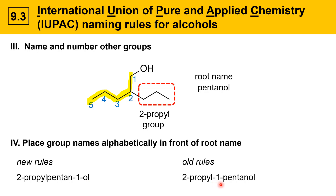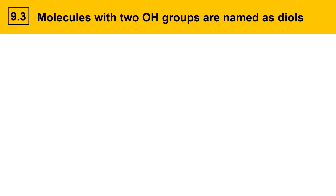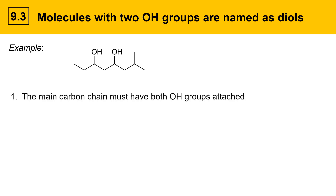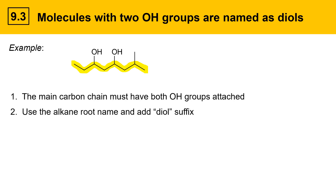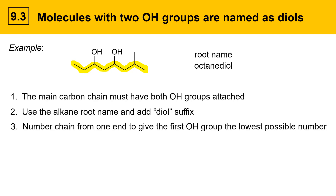Molecules that have two OH groups are named as diols. Here's an example of a molecule containing two OH groups. First, identify the main carbon chain — the main chain has to contain both OH groups. Then use the alkane root name and add the diol suffix. For this molecule, the root name is octanediol because it's an eight-carbon chain with two OH groups.